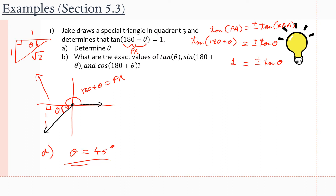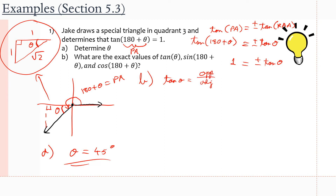That's part A — we're done just from analyzing the information we have. Now part B is going to take some calculation. It asks for the exact values of tan θ, sine of (180 + θ), and cosine of (180 + θ). Let's deal with tan θ first. We took out our special triangle and tan θ equals opposite over adjacent, which is one.